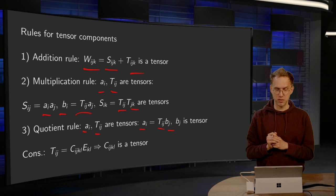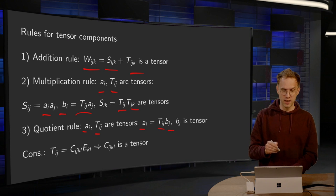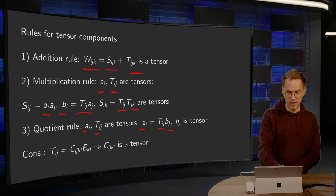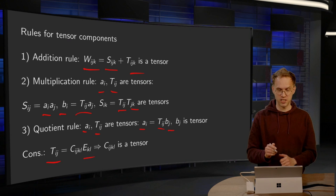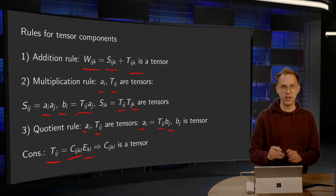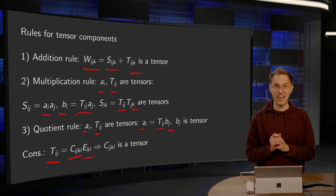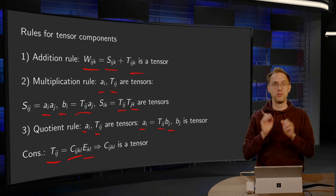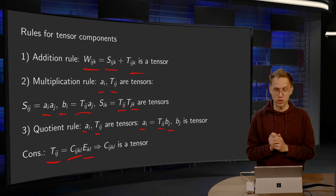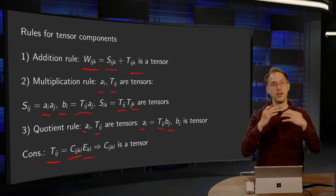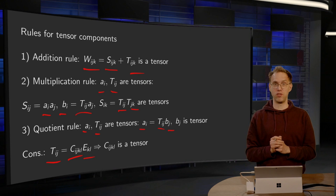Now, a consequence of this quotient rule is that if we have Tij, our stress tensor, and Ekl, our strain tensor, related by some rank 4 tensor Cijkl, if you have this relation between stresses and strains, then we know, due to this quotient rule, that this Cijkl is also a tensor. So that's how we are going to use this quotient rule.